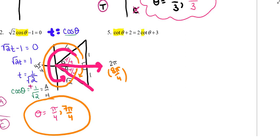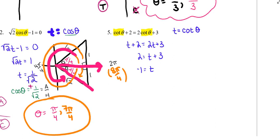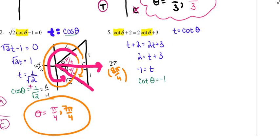In number 5, I'm going to let t be cotangent of theta. So I've got t plus 2 equals 2t plus 3. I'm going to subtract t from both sides and subtract 3 from both sides, giving me t equals negative 1. But t is really cotangent of theta, so cotangent of theta equals negative 1.